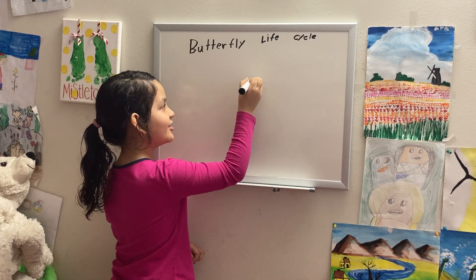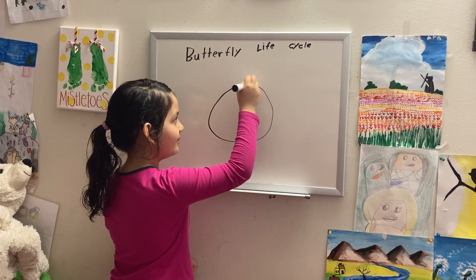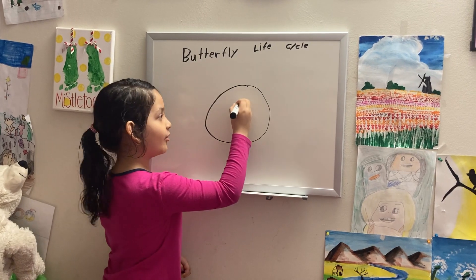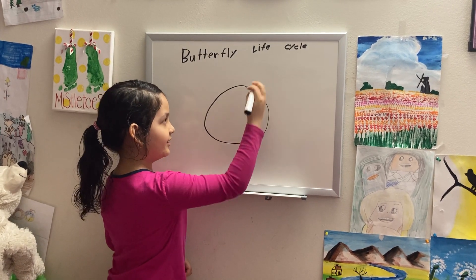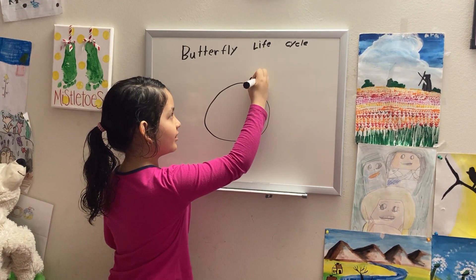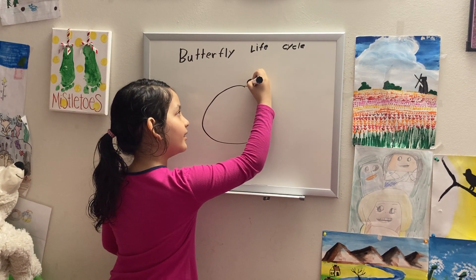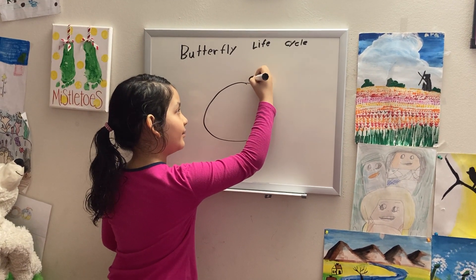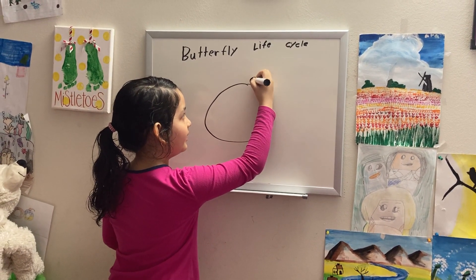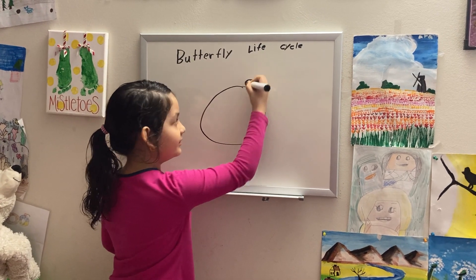First, there's a circle in the middle for the butterfly — I'm going to be drawing it in the end. So, I'm going to be drawing the circle. First, a baby butterfly comes. That means a mommy, and it lays its eggs on a leaf.